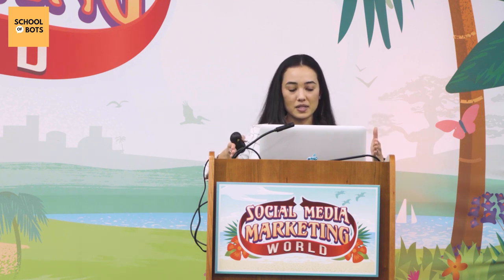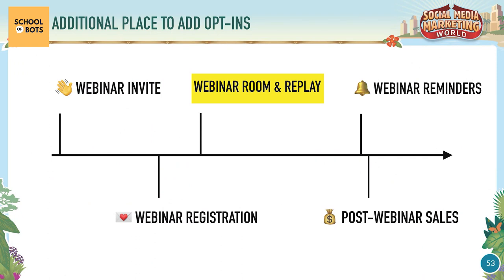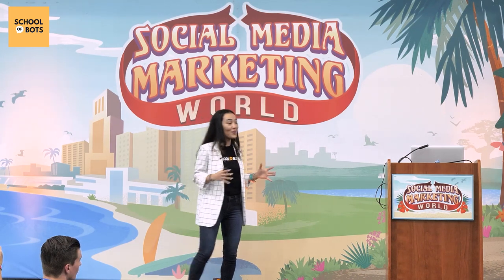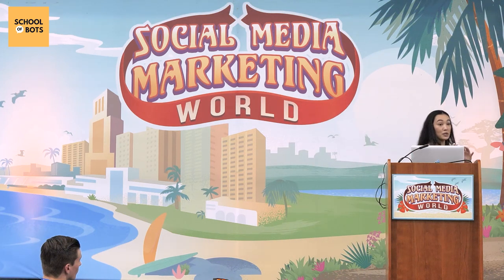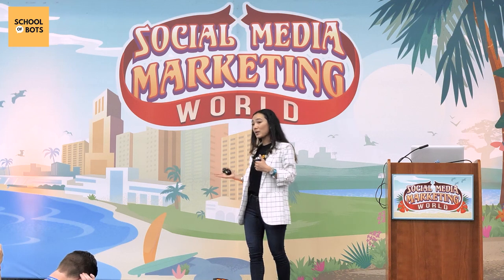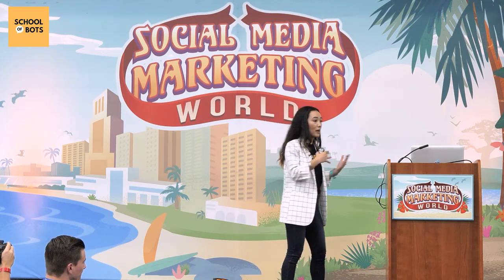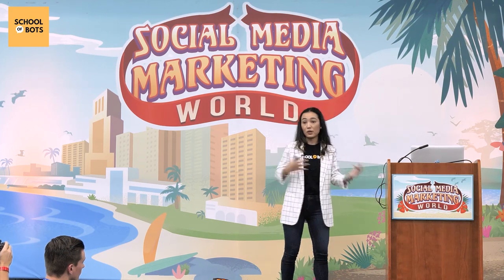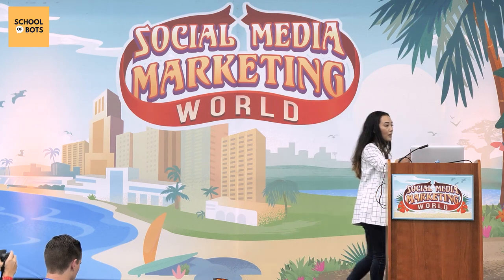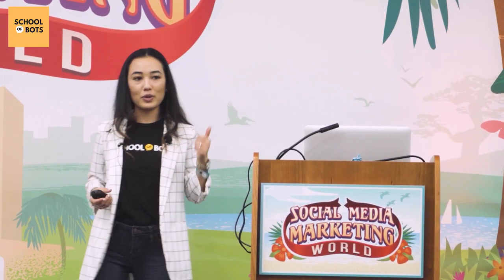Those are the four pillars: webinar invite, registration, reminders, and sales. The in-between phase — the webinar room and replay — is the easiest thing you can implement right away: add a chat widget on the webinar room and replay page, available for questions, with FAQs about tech issues, the content being covered, and the offer or call to action at the end. When people engage there, they're inside the 24-hour window and are hot leads — you can then message them post-webinar to share the replay or your offer.